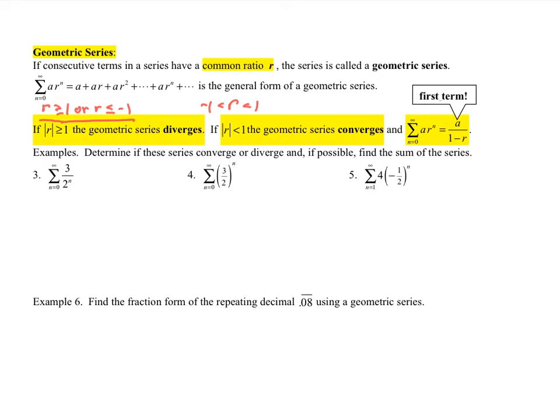This one here, absolute value of r, means the distance is less than 1, means that r is going to be between negative 1 and 1. So that's just a different way to write it. Then the series will converge under this condition. And then the sum will be this infinite series sum that you learned in pre-calculus.